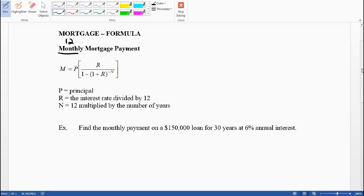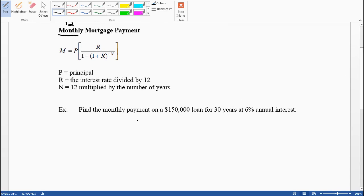Let's do this example. Find the monthly payment on a $150,000 loan - that's your principal, the amount you borrow. 30 years is the time. 6% is the interest rate. What I want to do first is find big R.